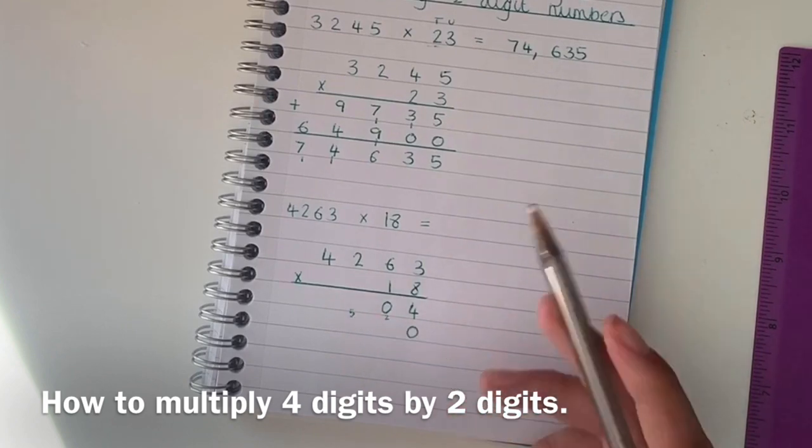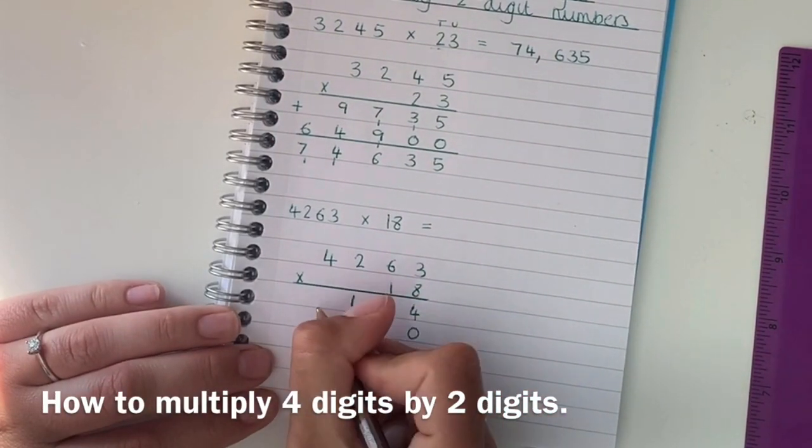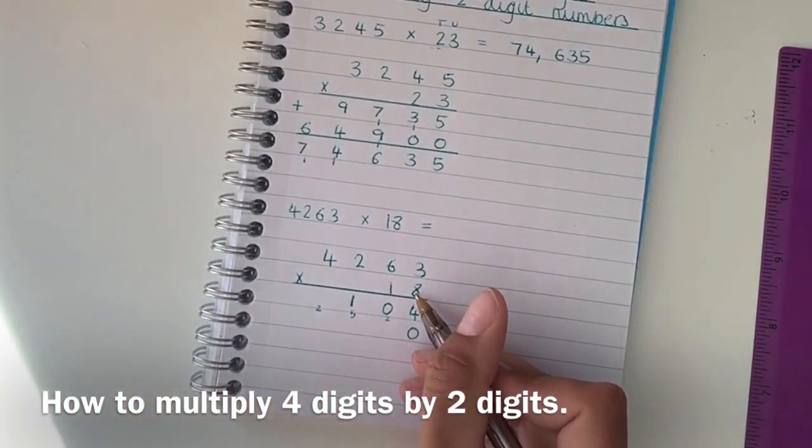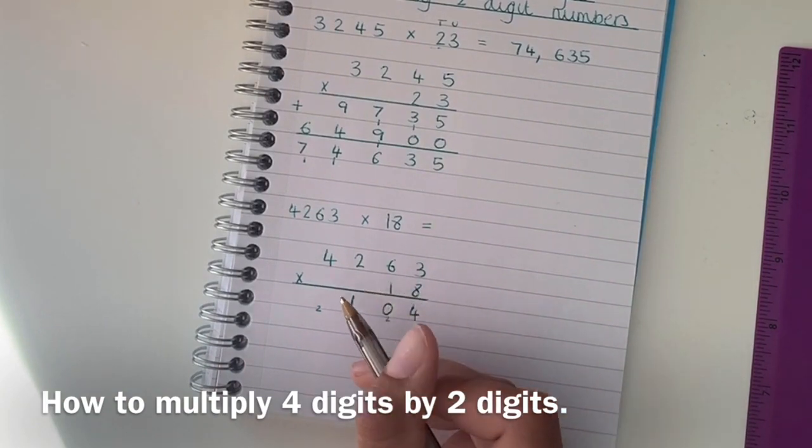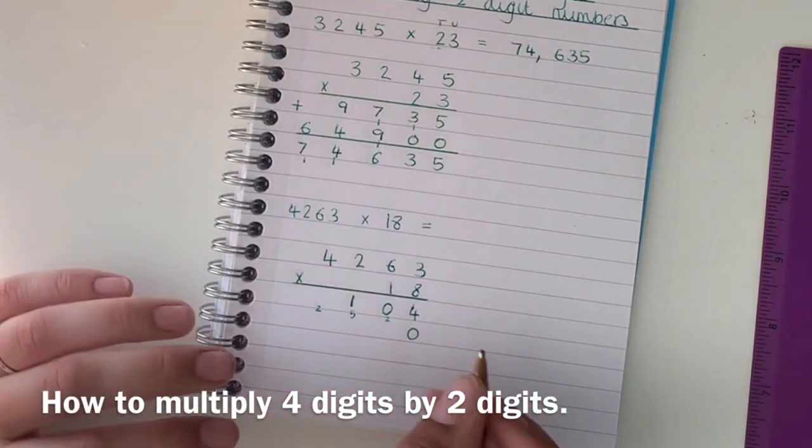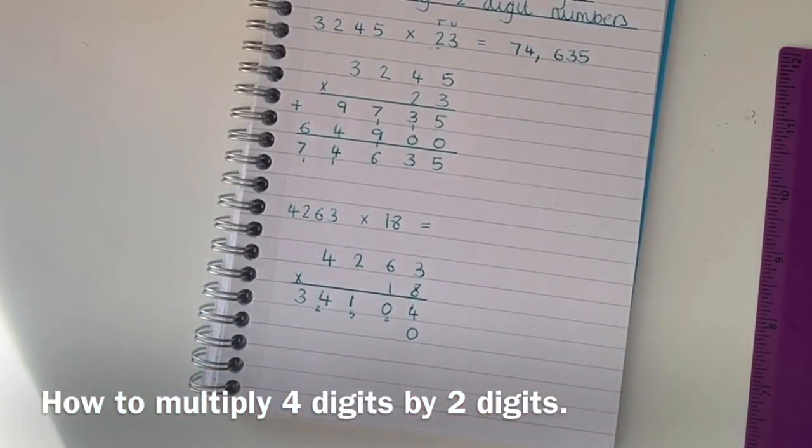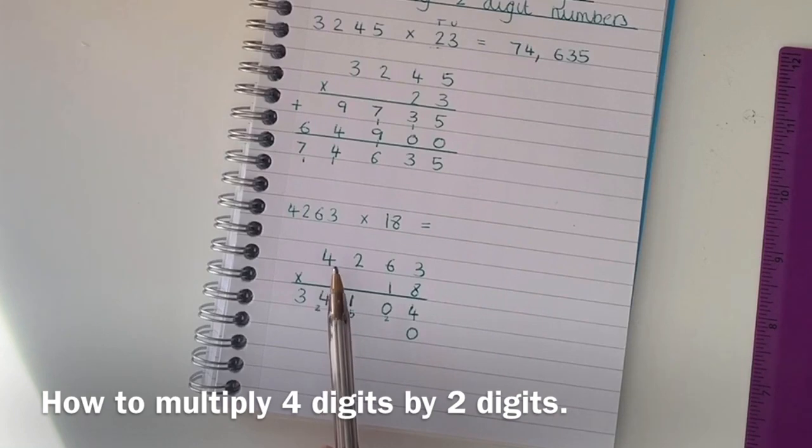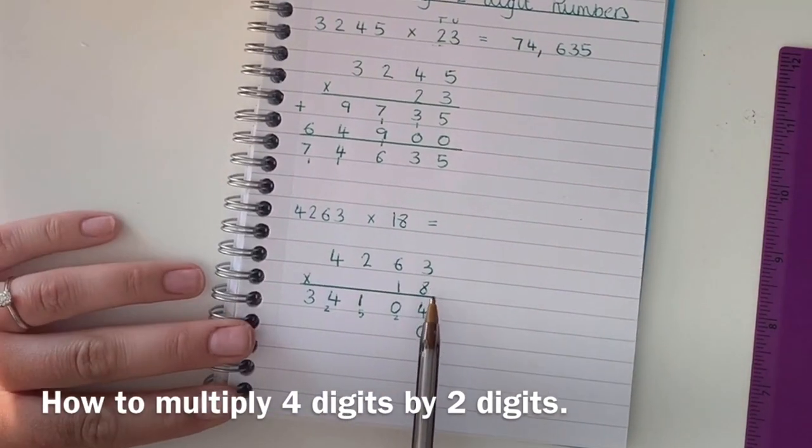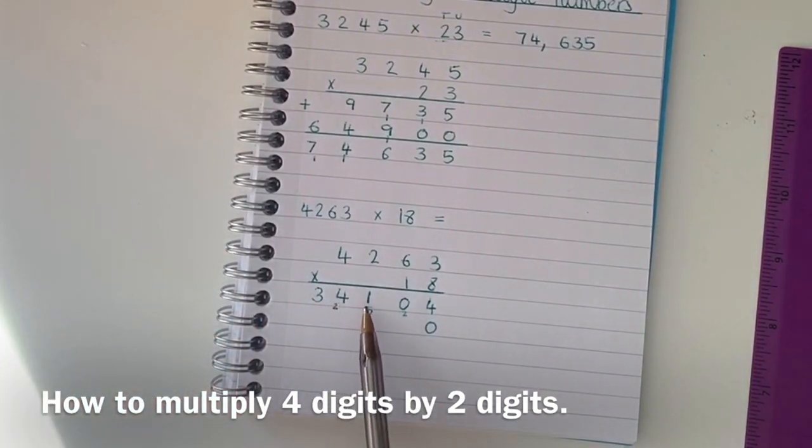8 times 2 is 16. Add that 5 will be 21 so I'm going to put a 1 down and carry a 2, and now 8 times 4 is 32. Adding that 2 is 34. So my answer to 4,263 multiplied by 8 is 34,104 but that's not finished.